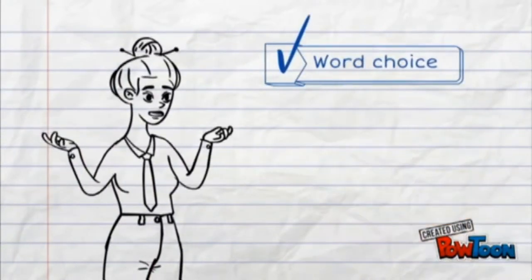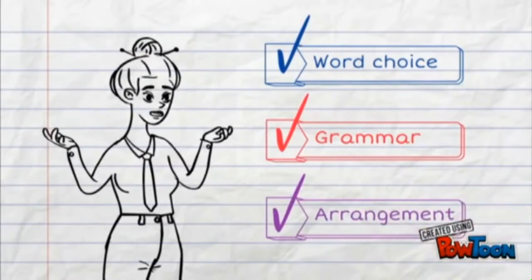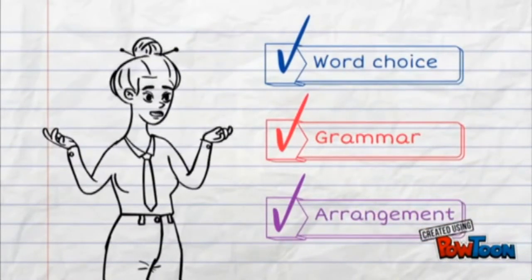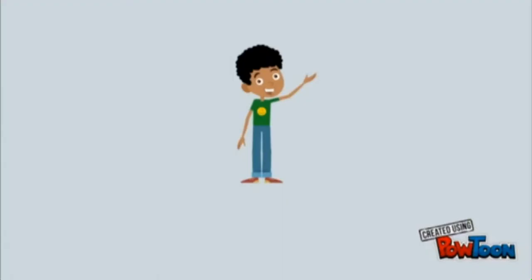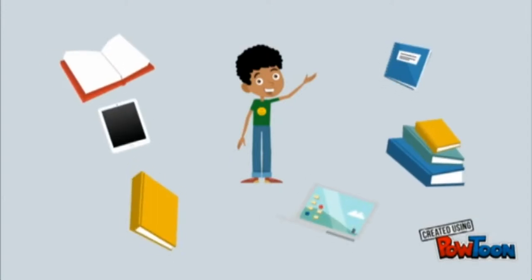Style refers to the unique way that the author delivers an explanation or description, and can include such features as word choice, grammar, and arrangement. Choose a short piece to read and see if you can pick out some examples of style choices that the author made that appealed to you and helped you understand the author's explanation or description.